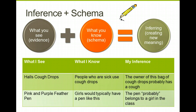This is a very basic look at inference, but I want to make sure you understand that you do this on a regular, consistent basis — you're just maybe not aware of it. For example, you might see someone pull some Hall's cough drops from their pencil pouch. What you already know is that people who are sick or have a sore throat use cough drops, so instantly your mind registers that the person next to you must be sick.